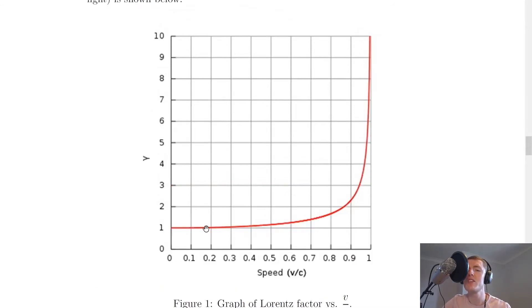However, if we now consider the speeds to be greater than 10% the speed of light, you'll see that gamma starts increasing above 1, so that means we are going to have some effects from time dilation.